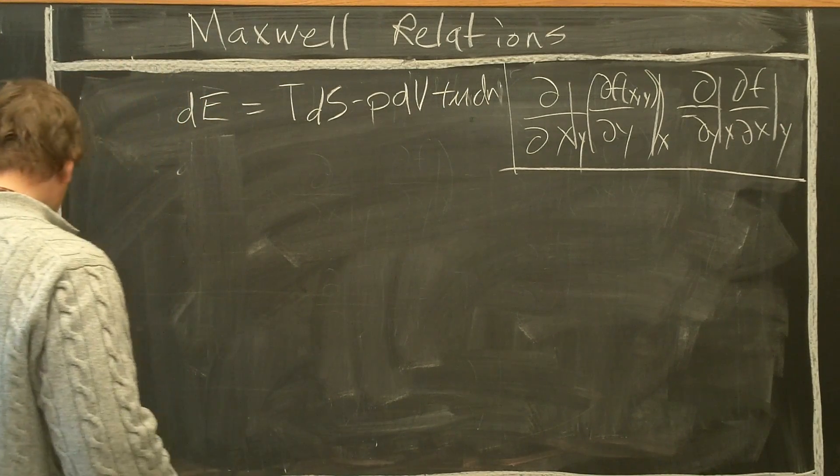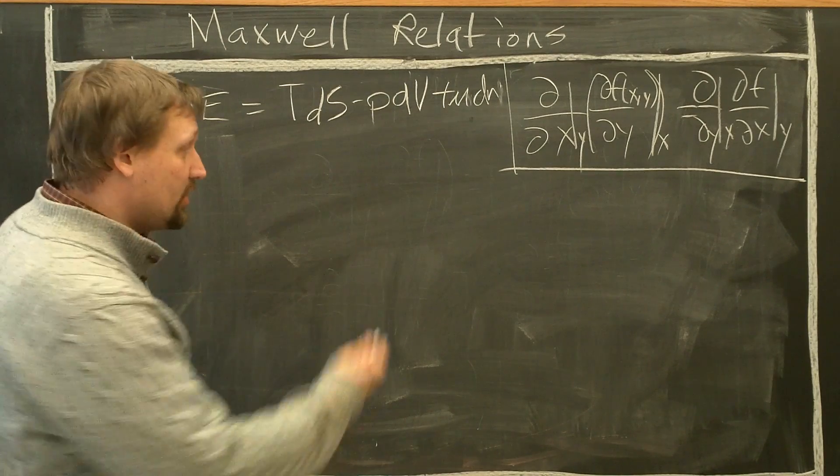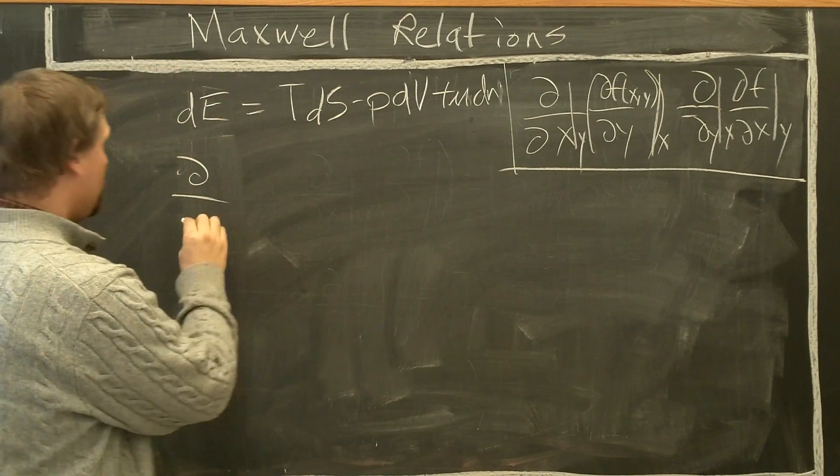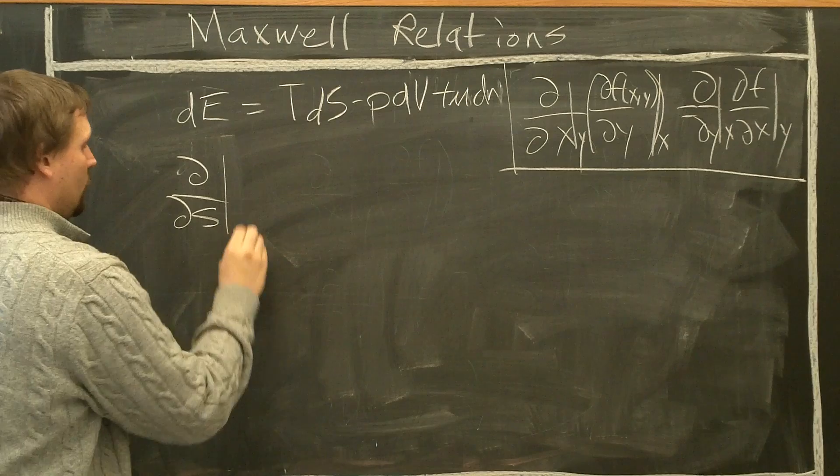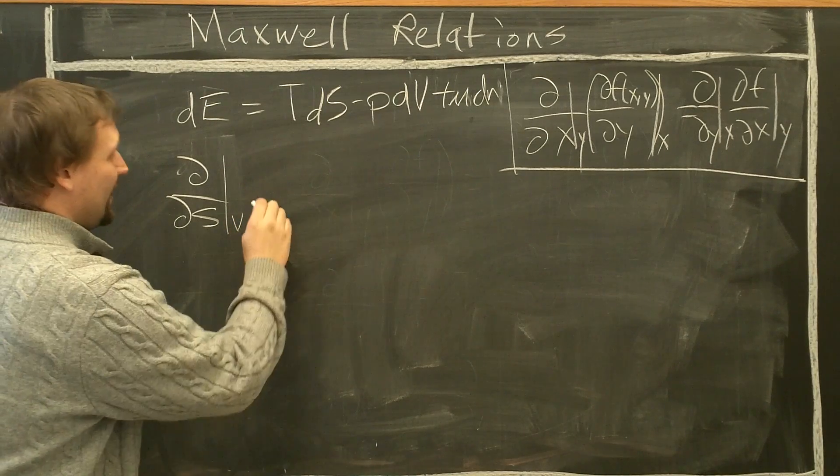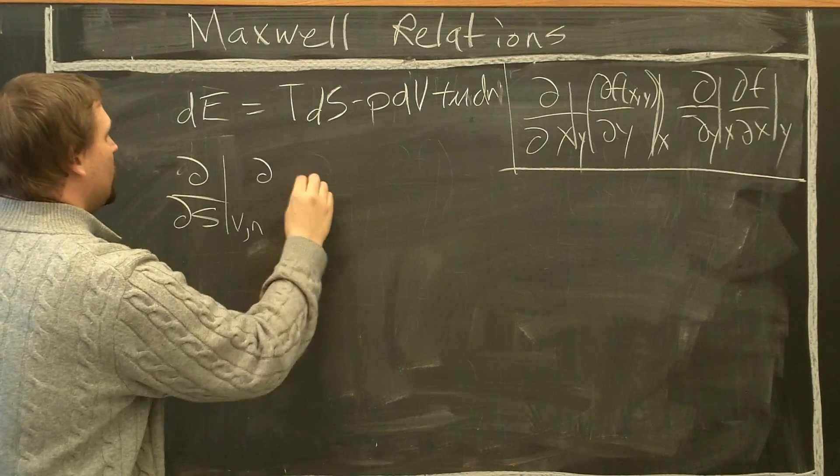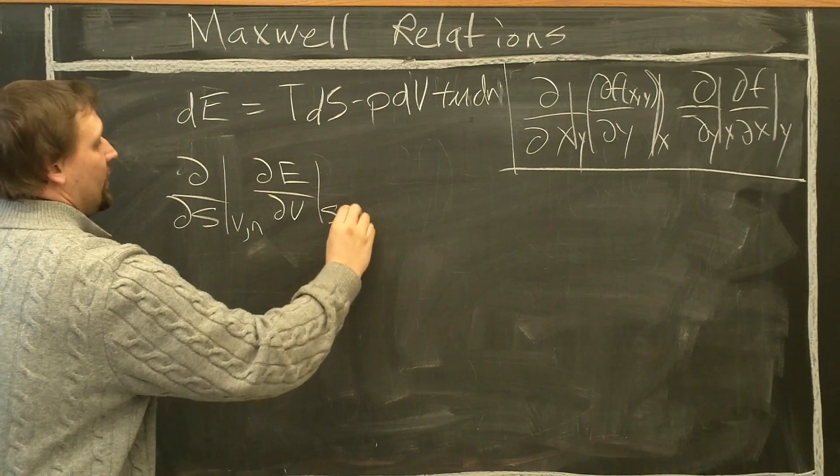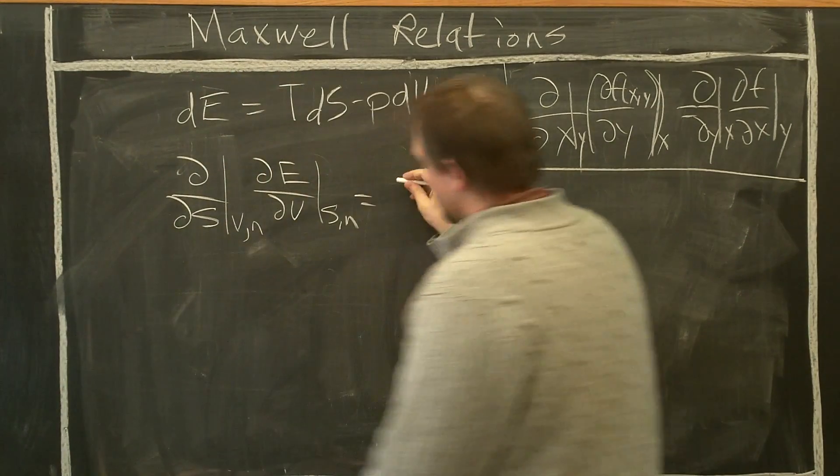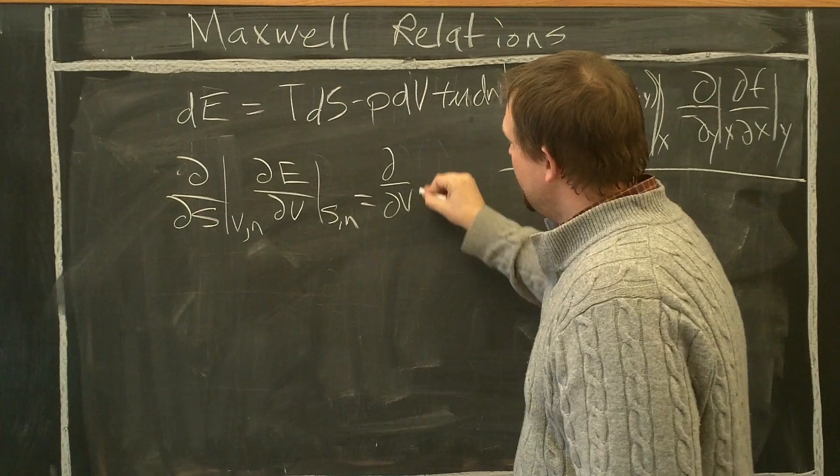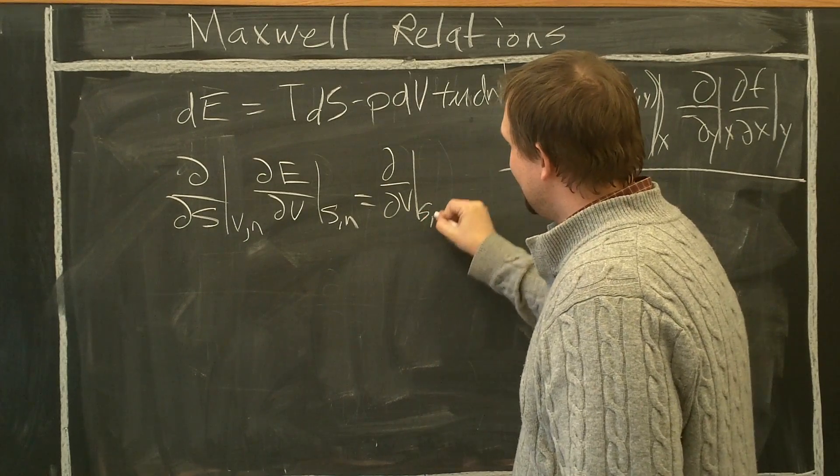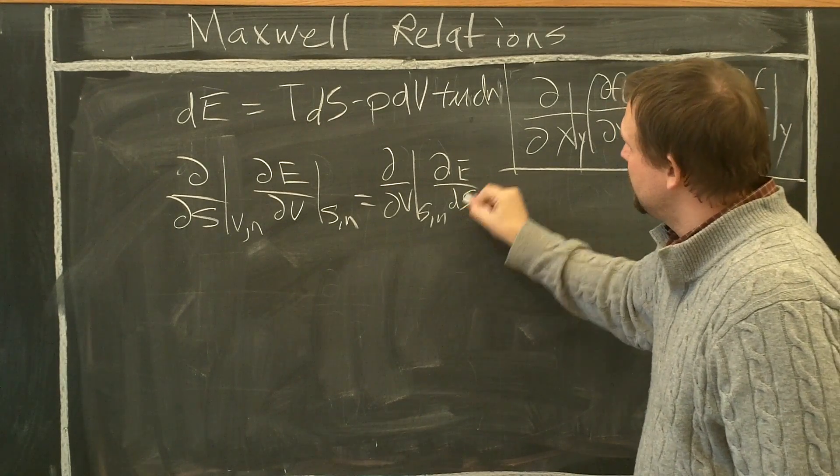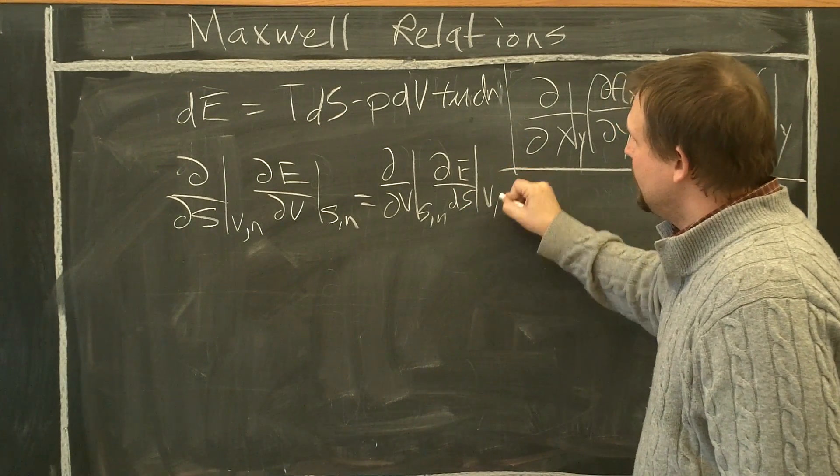So starting with dU, what we do to get to Maxwell relations is just use this property. Let's just write this out, and then we'll actually solve for it. So, ∂/∂S with V and N constant times ∂E/∂V holding S and N constant must be equal to ∂/∂V holding S and N constant ∂E/∂S holding V and N constant.